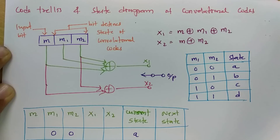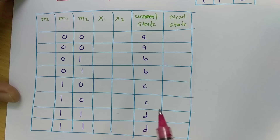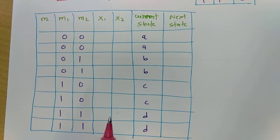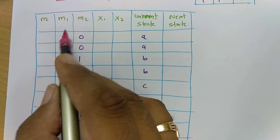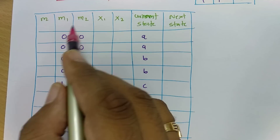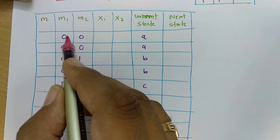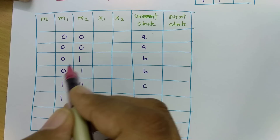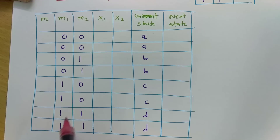To cover all possibilities, I have made a table that we need to solve first, and after that we can easily make the code trellis from it. As I have told, m1 and m2 justify the current state of the convolution encoder. For all possibilities: if m1 and m2 is 00, current state is A; if 01, current state is B; if 10, current state is C; and if 11, current state is D.